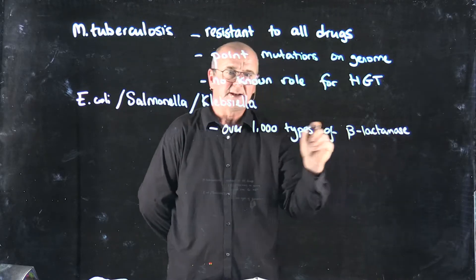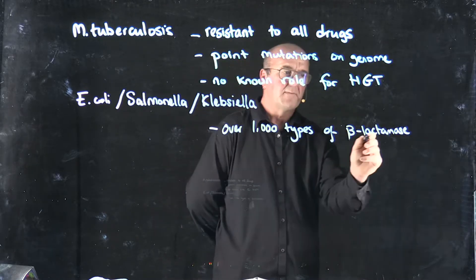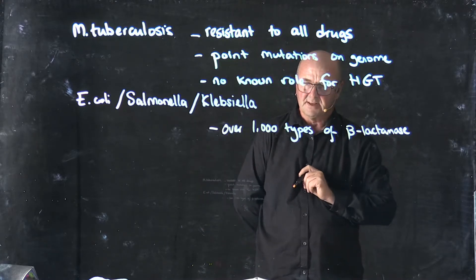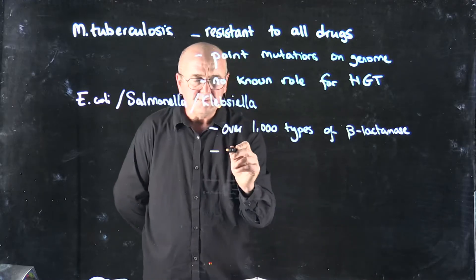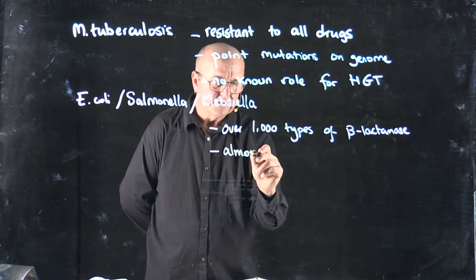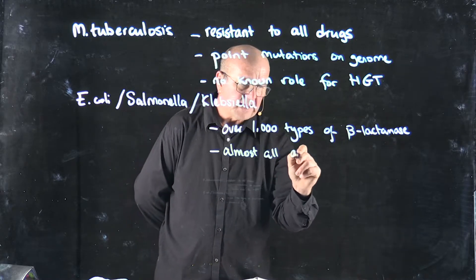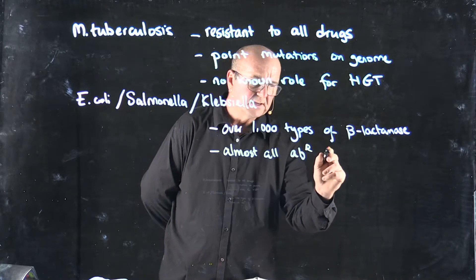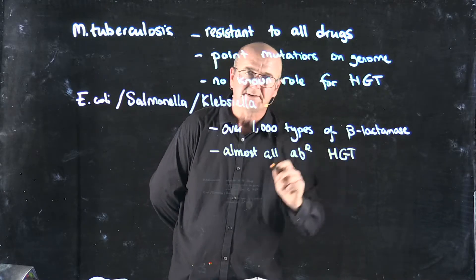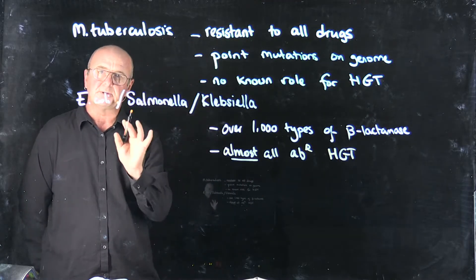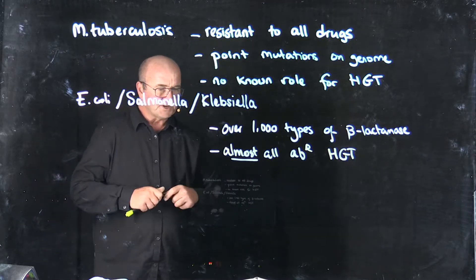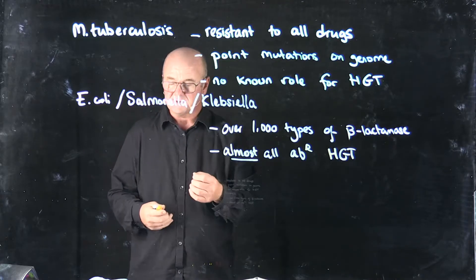Beta-lactamases are the enzymes that break down beta-lactams. There's over 1,000 types of them. And almost all antibiotic resistance is transferred by horizontal gene transfer. I stress almost, not all of it, but almost all of it is transferred by horizontal gene transfer.